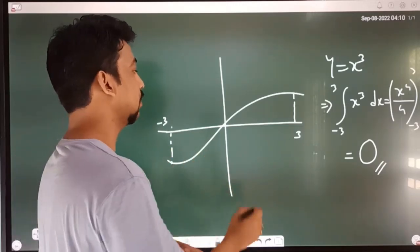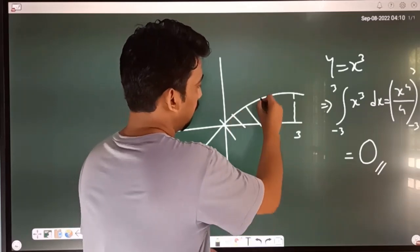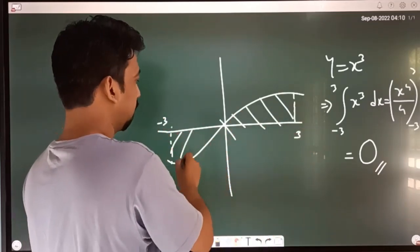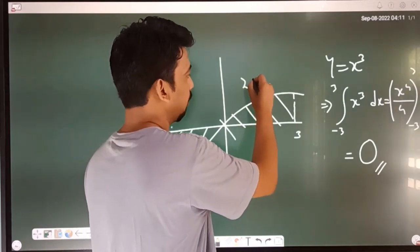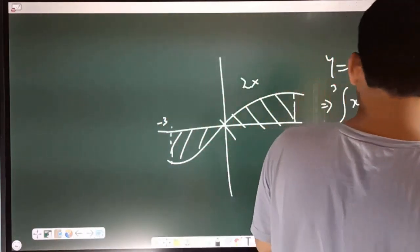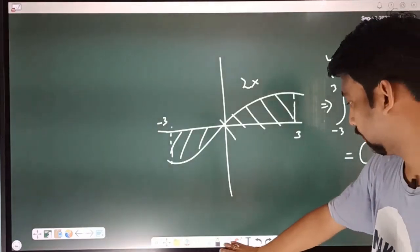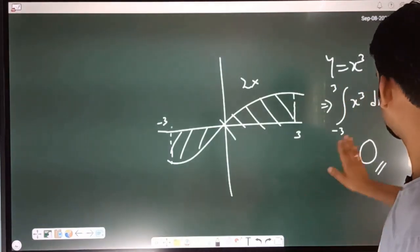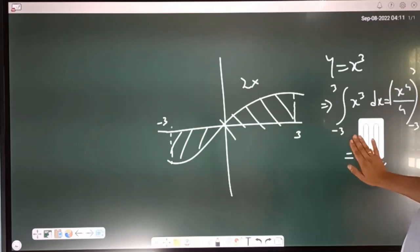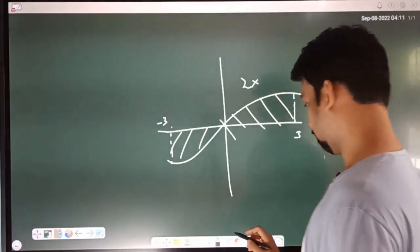If you have a problem with this graph, you can see the difference between the areas. We will multiply all the differences with the area. What do we call this limit?